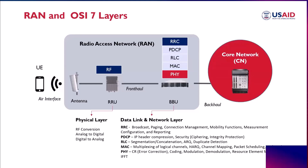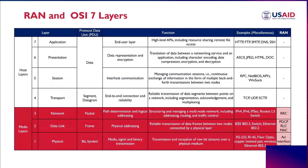Now let's map the RAN to the OSI layer. This table shows the OSI layer and the mapping of the Radio Access Network layer. As mentioned, the RAN mapping to the OSI layer falls in three layers: the Network layer, the Data Link layer, and the Physical layer. Specifically for the RAN, the Radio Access Network has different protocols.